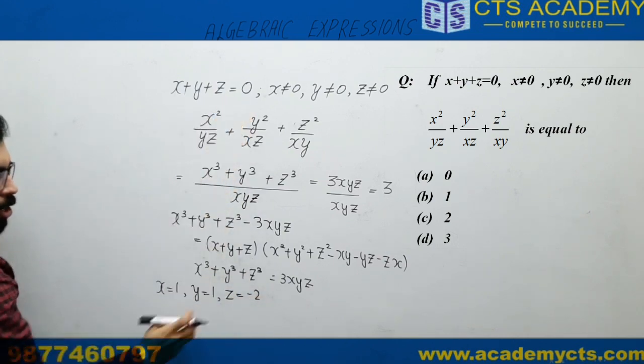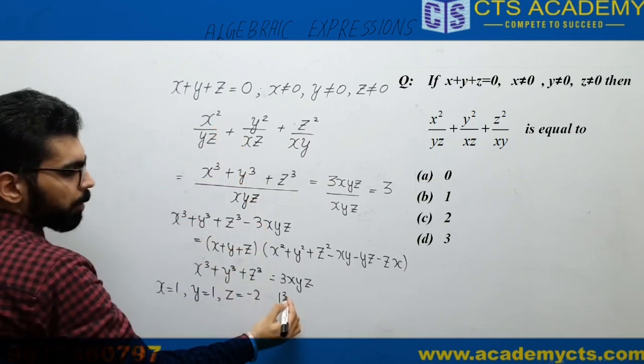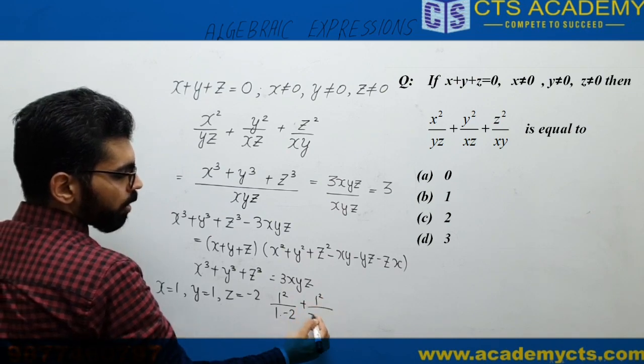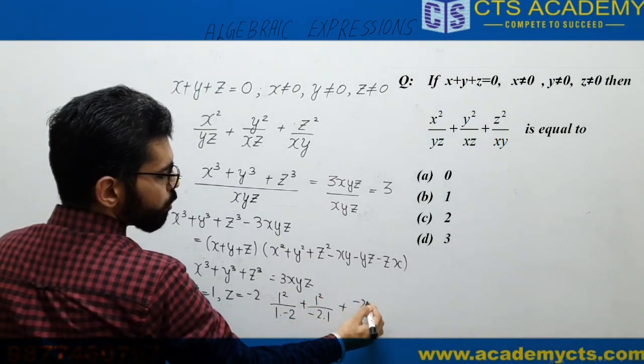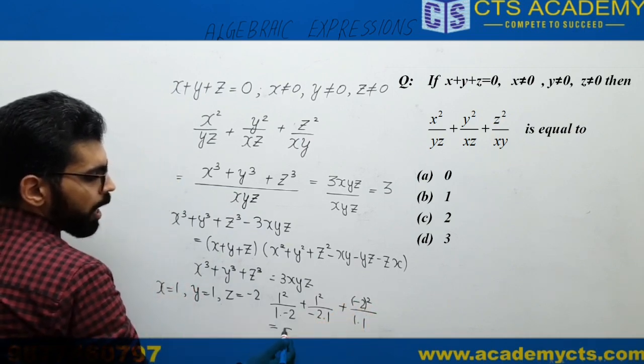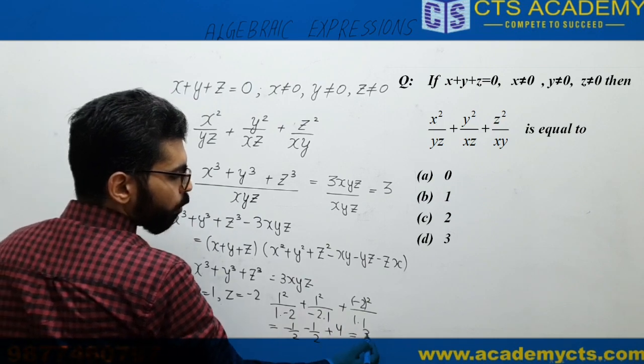If we put x = 1, y = 1, and z = -2, what will this expression become? It becomes 1²/(1×-2) + 1²/(-2×1) + (-2)²/(1×1). It means it will become -1/2 - 1/2 + 4. That comes out to be 3.